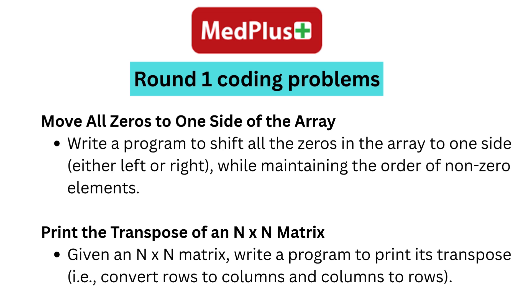Move all zeros to one side of the array: write a program to shift all the zeros in the array to one side, either left or right, while maintaining the order of non-zero elements. Print the transpose of an N×N matrix: given an N×N matrix, write a program to print its transpose, i.e., convert rows to columns and columns to rows.